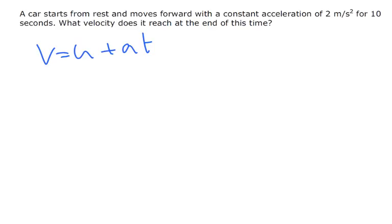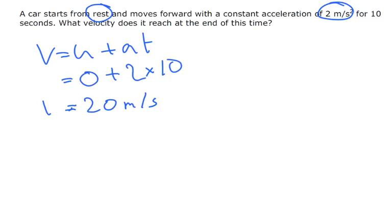OK, so V is what we're trying to find out. U started from rest, so this is going to be 0, plus the acceleration is 2 times by 10 seconds. So we end up with 20 metres per second. So there we go, V is 20 metres per second.